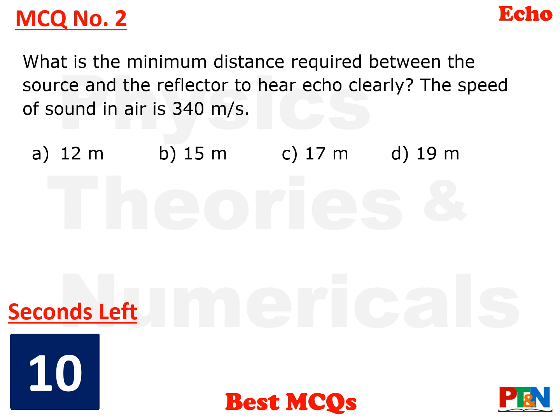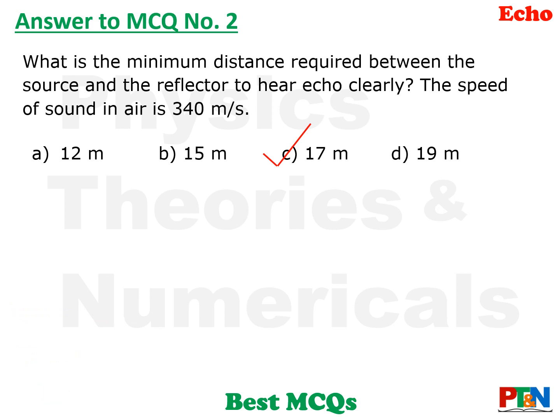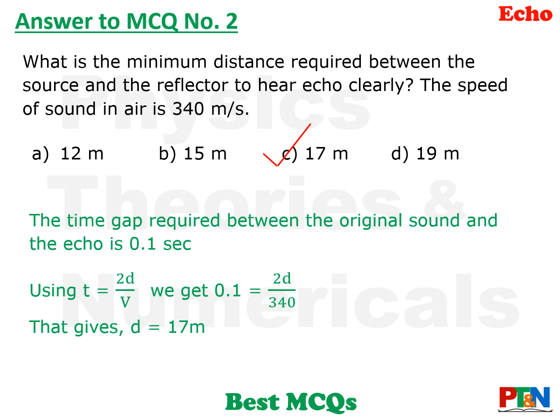Next MCQ: What is the minimum distance required between the source and the reflector to hear an echo clearly? Take the speed of sound as 340 m/s. The answer is Option C — 17 metres. The formula used is d = vt/2, giving t = 2d/v. The time t is 0.1 seconds because the human ear requires a gap of 0.1 seconds to hear two sounds separately. Substituting t = 0.1 into t = 2d/v gives d = 17 metres.